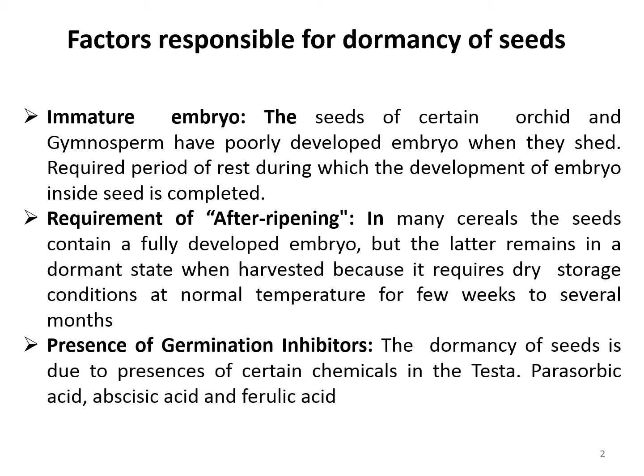The next factor is the presence of germination inhibitors. Sometimes the dormancy of seed is due to the presence of certain chemicals in the testa, in the embryo, or in the pulp of fruit. These chemicals inhibit the germination of the seed while it is still inside the fruit. Some naturally occurring germination inhibitors are parasorbic acid, abscisic acid, and ferulic acid.